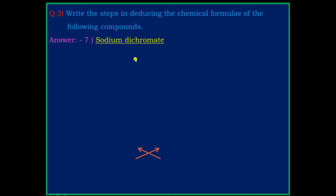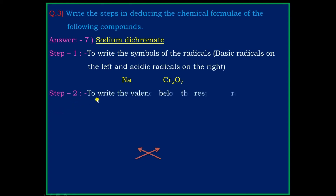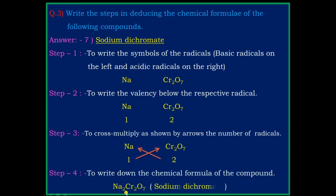Question 7: Sodium Dichromate. Step 1: write the symbol of the radicals — basic radical on the left and acidic radical on the right. The symbol of sodium is Na and the symbol of dichromate is Cr₂O₇. Step 2: write the valency — the valency of sodium is 1 and the valency of dichromate is 2. Step 3: cross multiply — 1 is multiplied by Cr₂O₇ and 2 is multiplied by Na. Step 4: the chemical formula is Na₂Cr₂O₇ — sodium dichromate.